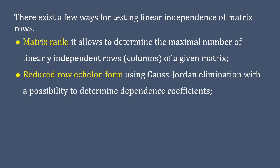A common approach to finding the rank of a matrix is to reduce the matrix to a simpler form, generally row echelon form, by elementary row operations. Therefore, we can use a reduced row echelon form to determine the linearly independent rows.